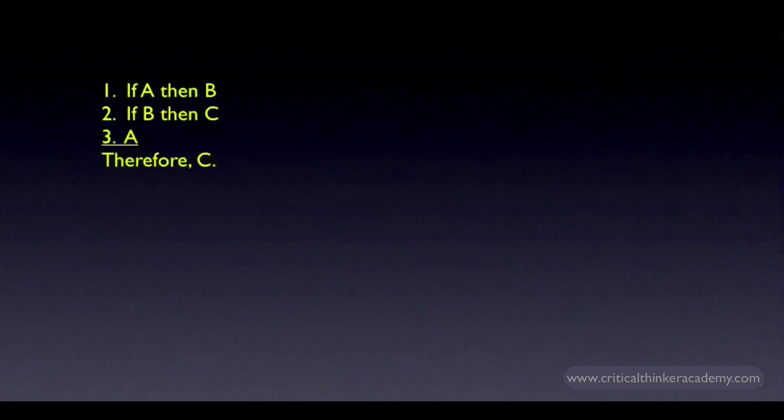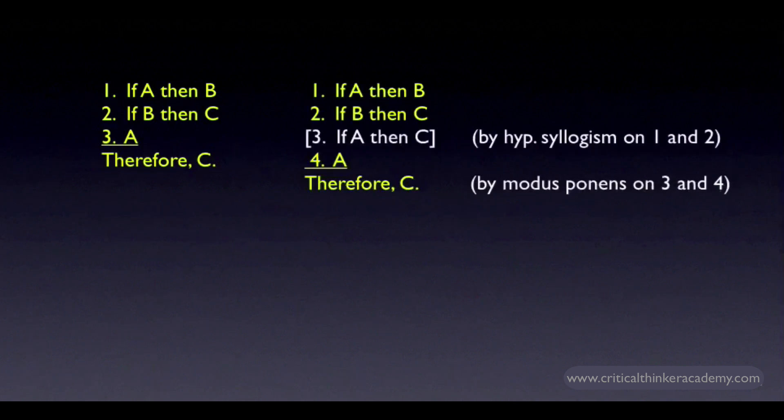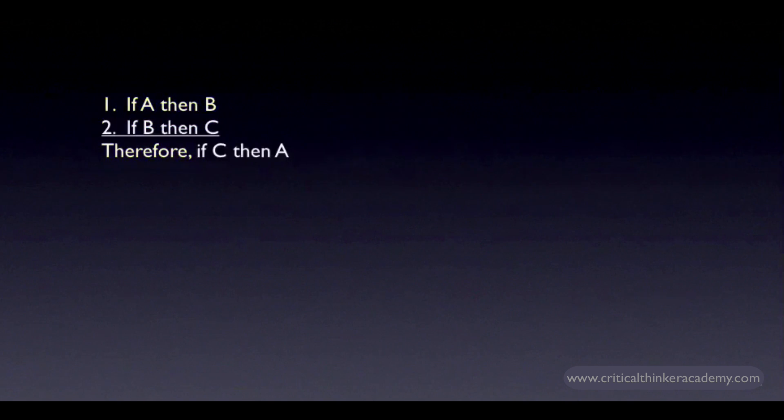It should be obvious, but in case it's not, you can also use this form to generate a modus ponens argument. In this example, we can see that the argument is valid, but we're actually using hypothetical syllogism in our head to derive a necessary premise. From premises one and two we get the assumed premise 'if A then C,' then from this new premise plus the affirmation of A, we can derive C using modus ponens.